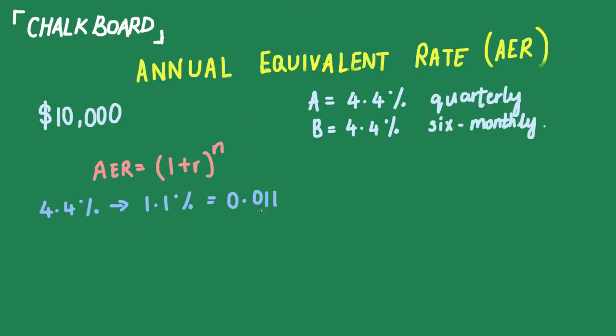We have the rate of return. Next, we add one, so we have 1 plus 0.011. Since it's quarterly, the number of periods is to the power of four. If you plug that into the calculator, you should get 1.044473.